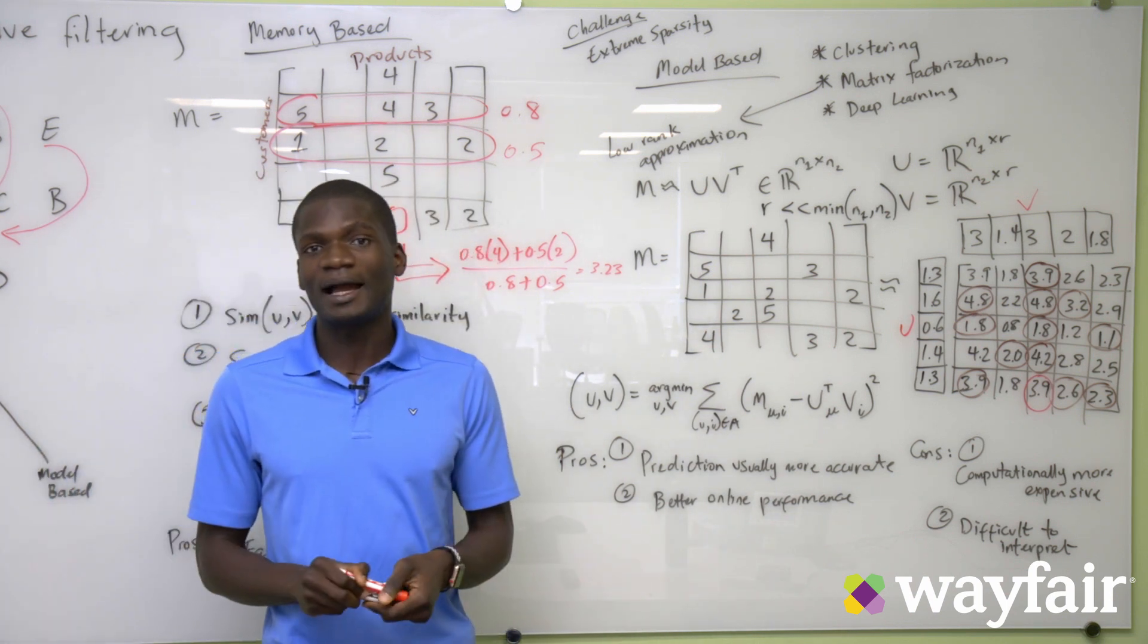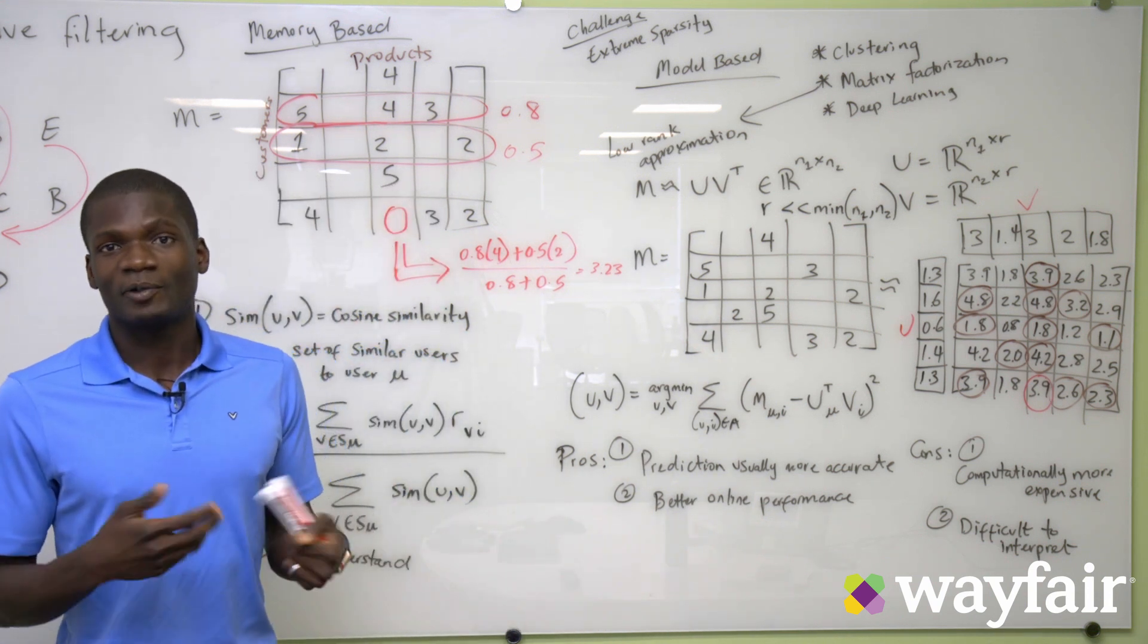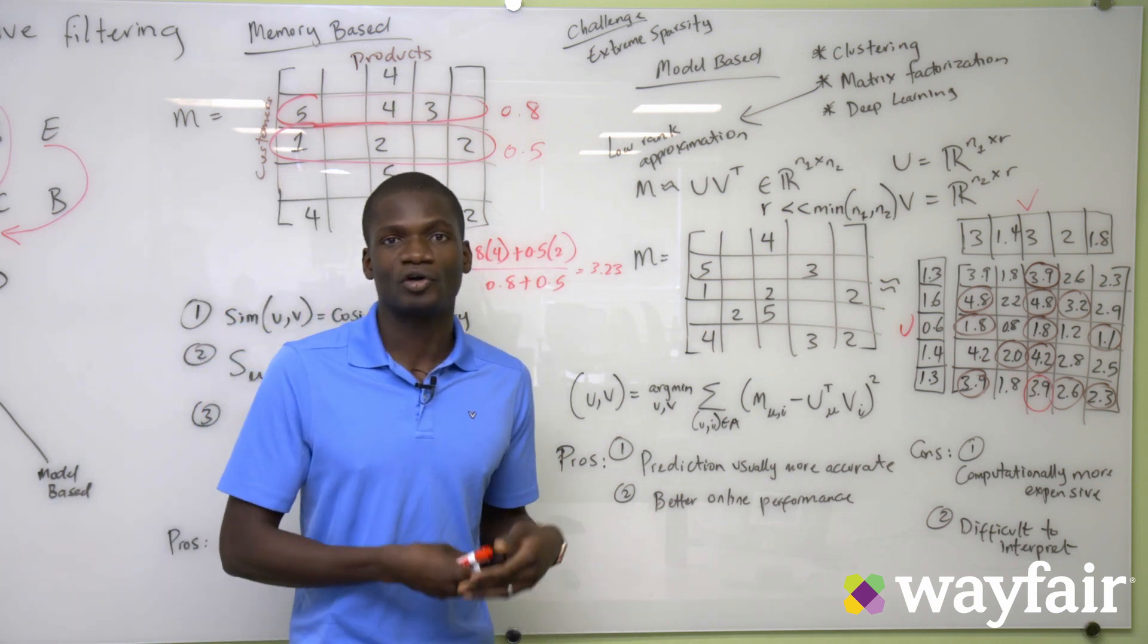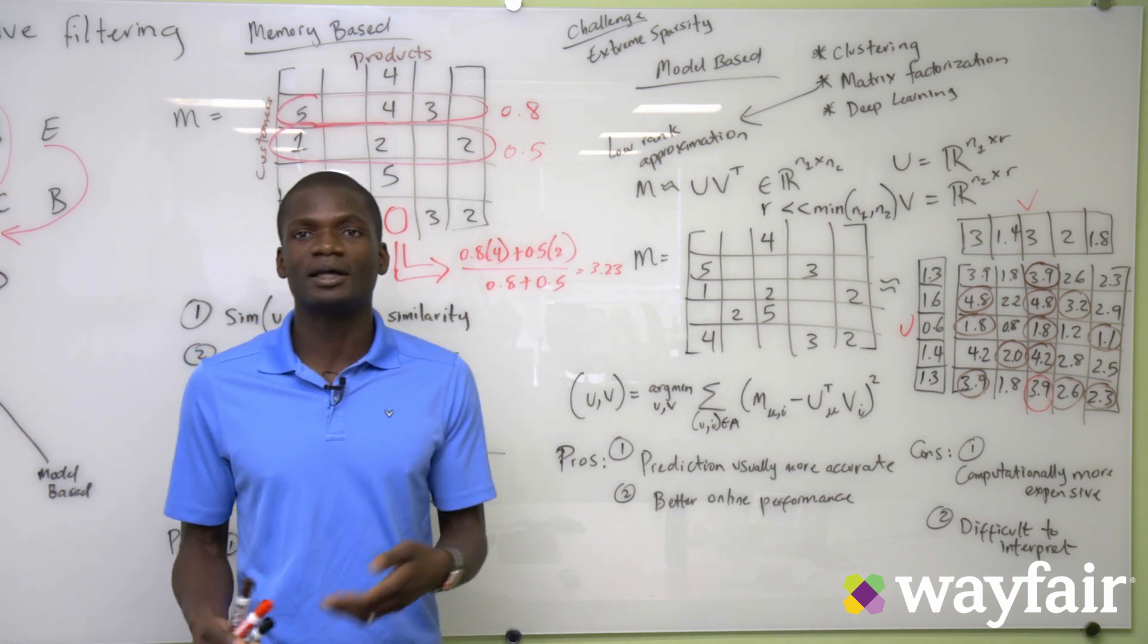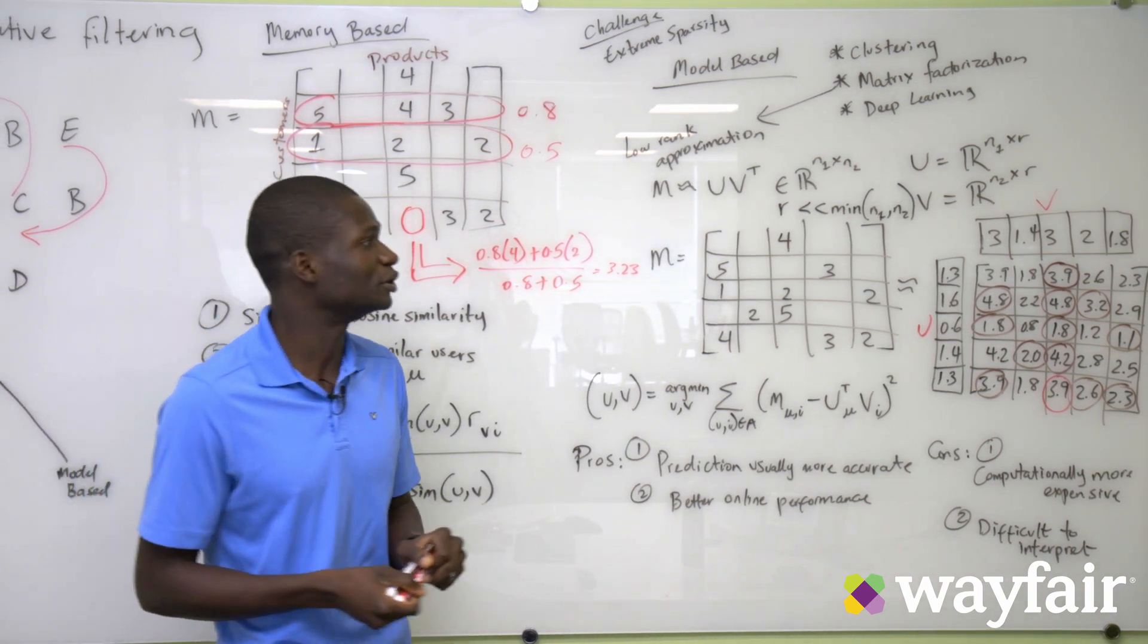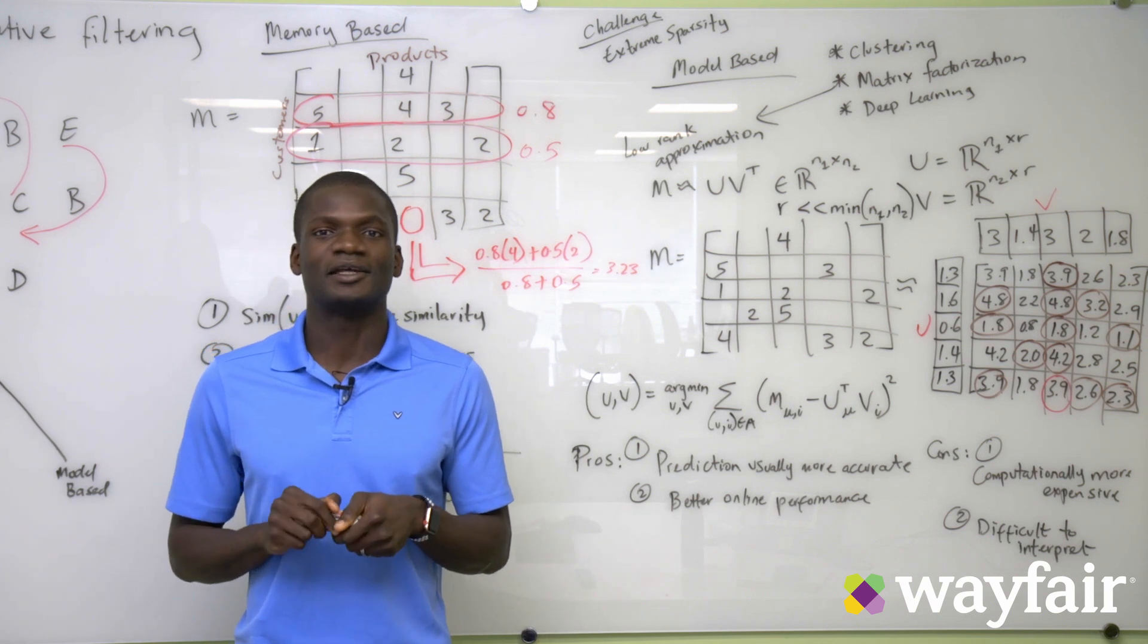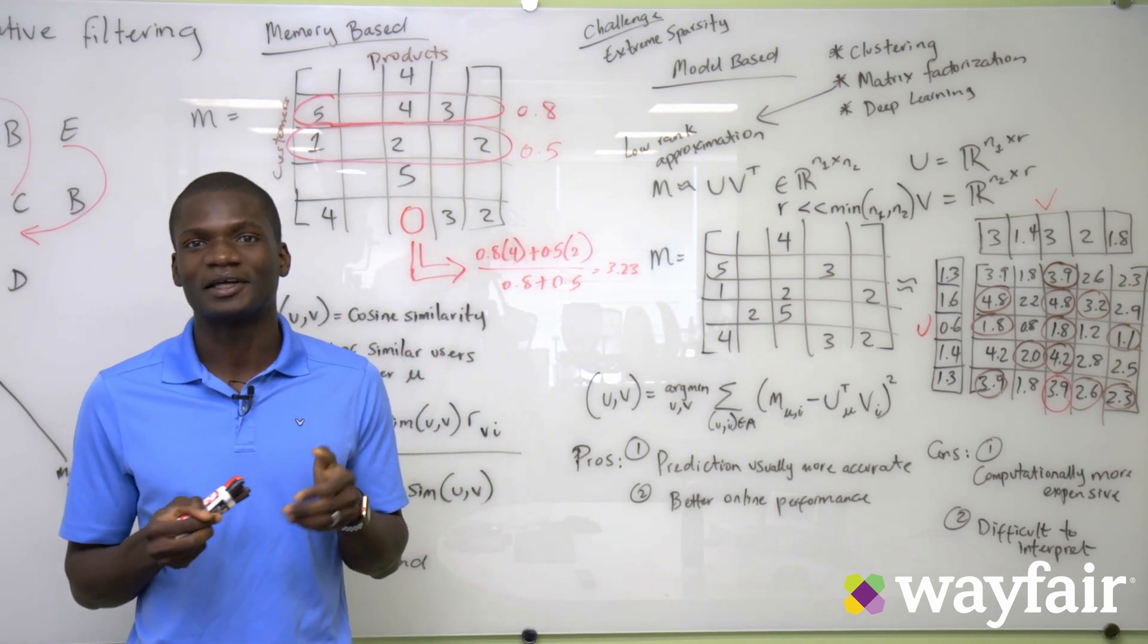Furthermore, a main drawback of collaborative filtering in general is the cold start problem. So that is when we have a new customer or a new product, we need other techniques to make recommendations in that situation. That's all for today. Thank you for listening. And tune back for more videos here at Wayfair Explainer Series.